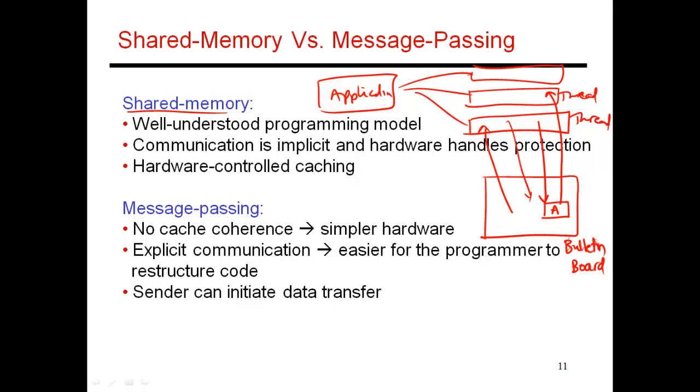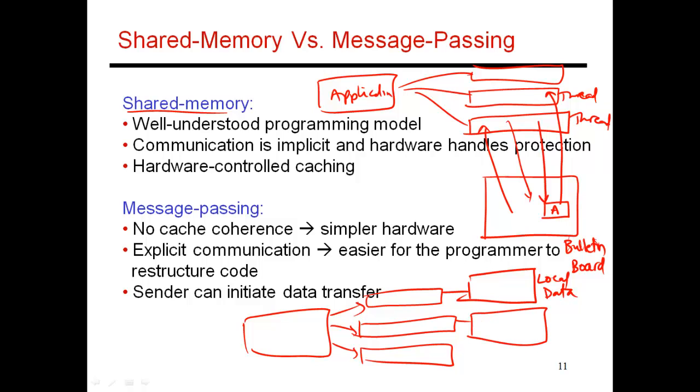There was a second model where, again, you have a single application. It's broken up into many different threads of execution. But there is no longer a common pool of data. So this thread has access to one piece of local data. Likewise, this thread has access to local data and so on. So now this thread cannot view the data that belongs to somebody else.